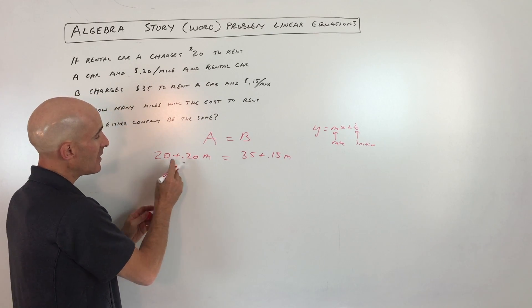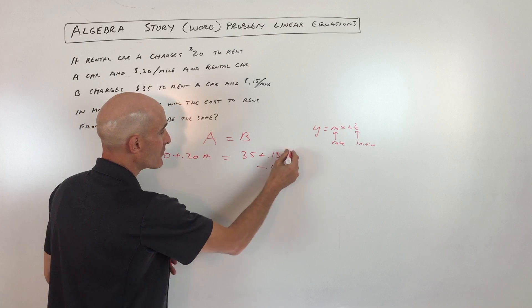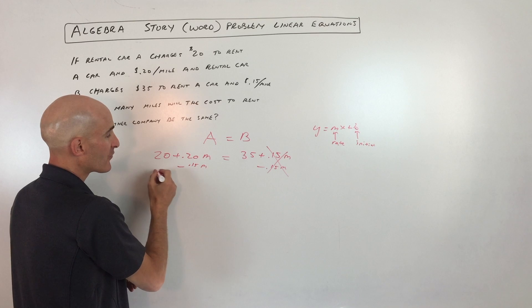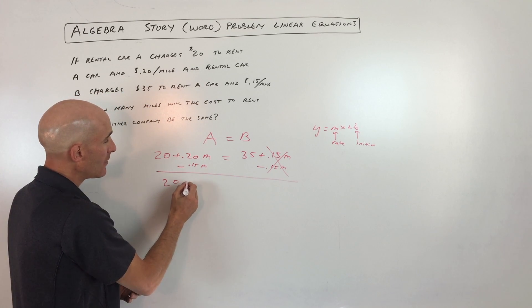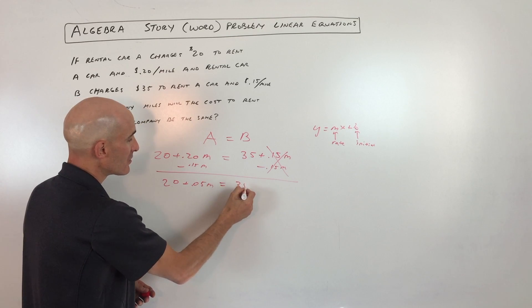So let's go ahead and solve this. Let's get the variables on one side. So I'm going to subtract 0.15m from the right to get rid of that. And I'm going to subtract 0.15m from the left to keep the equation balanced. So, so far we're down to 20 plus 0.05m equals 35.